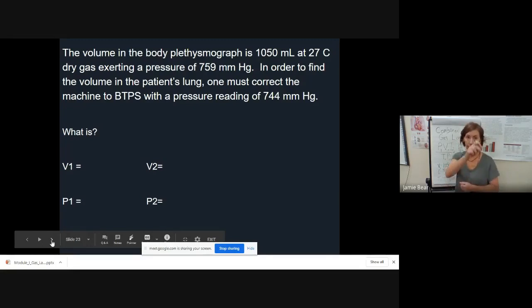In order to find the volume in the patient's lung, one must correct the machine to body temperature pressure standard with a pressure reading of 744. Body temperature pressure standard, or the S actually stands for saturated. Saturated means when there is water involved, and in the body temperature, there's always water involved. We always naturally through our nose saturate the gas that we breathe in. Body temperature, we'll start with T2 then. Body temperature in Celsius is 37 degrees. 37 plus 273, we can add 10 more degrees to that, and it's 310 Kelvin.